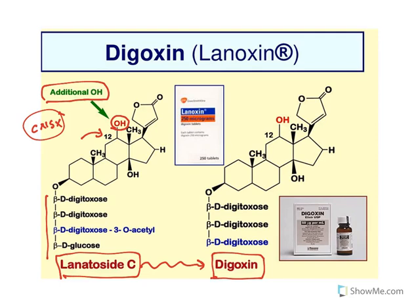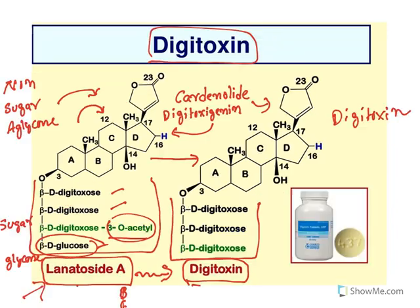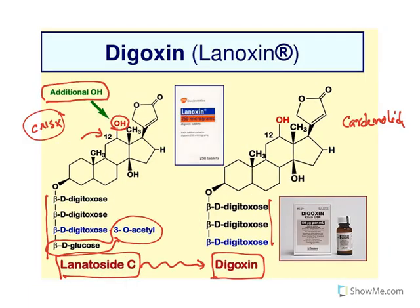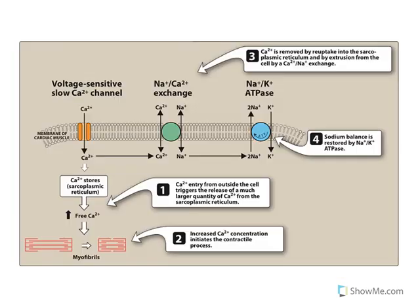The other structural features are very similar. Partial hydrolysis results in digoxin with the same cardenolide, and the 3-acetyl group and terminal glucose are removed just as in digitoxin. Remember: digitoxin — the name itself says it is a toxin because it has a lot of side effects, whereas digoxin has fewer side effects and is much more widely used.